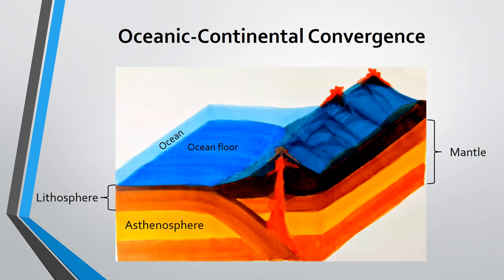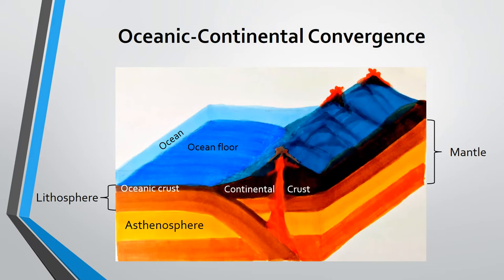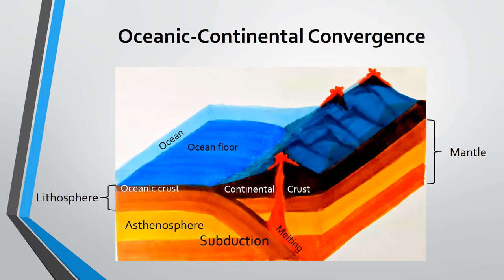The next type of converging plate boundary is characterized by oceanic-continental convergence. In this case, an oceanic crustal plate collides with a continental plate. Recall that an oceanic crust is thinner yet denser than a continental crust. Because of this, gravitational force will cause the oceanic plate to thrust beneath the continental plate in the process called subduction. As the oceanic plate plunges back into the mantle, it carries water with it. This amplifies the melting of the subducting plate, forming magma. These silica-rich molten rocks will rise and will be expelled through vents. Continuous eruption will lead to the formation of the continental arc.